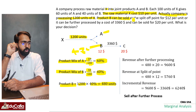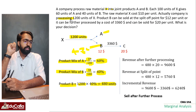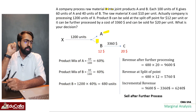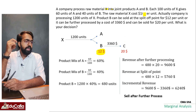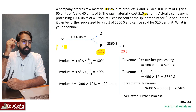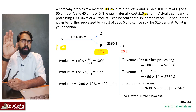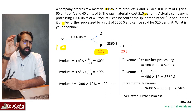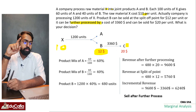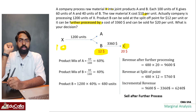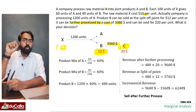Product B can be sold at the split-off point for $12. Alternatively, it can be processed further. We need to compare the revenue at the split-off point versus the revenue after further processing to make the correct decision.